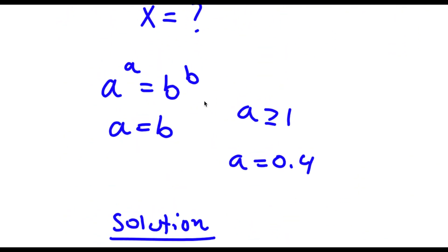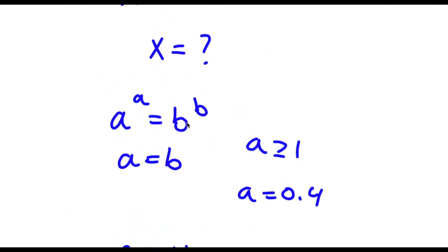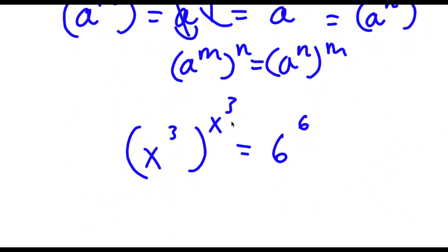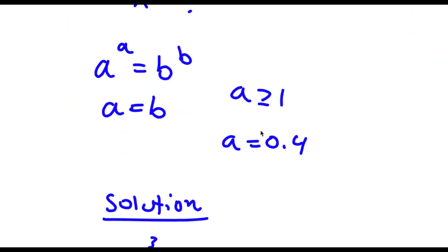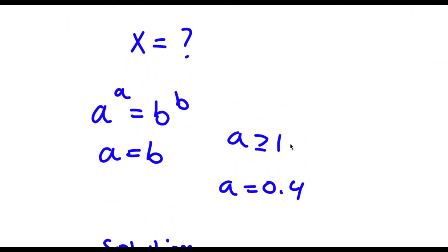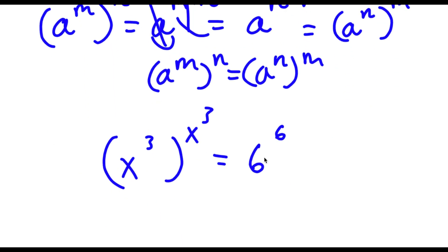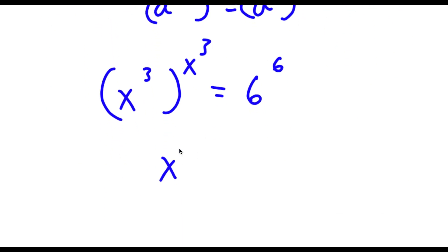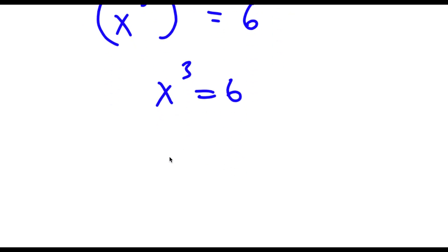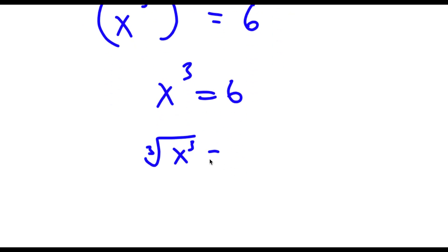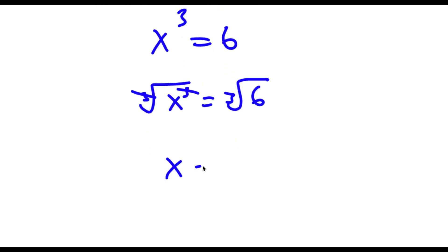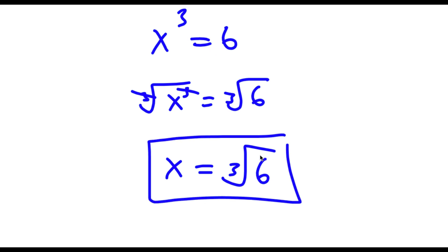Now remember, if I have something in the form a to the power of a is equal to b to the power of b, this means that a is equal to b. And remember, this is only if a is greater than or equal to 1. In this case, a is 6, which is greater than or equal to 1, so this property applies. So I have x to the power of 3 is equal to 6. Now to solve this, I'm going to take the cube root on both sides. These two cancel out, and now I'm left with x is equal to the cube root of 6. So this is my answer.